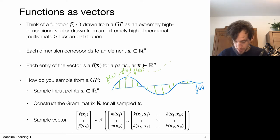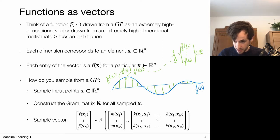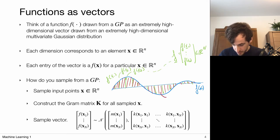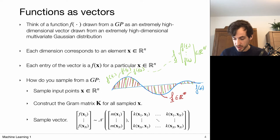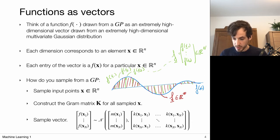Sampling a function at points x1, x2, x3 gives function values f(x1), f(x2), f(x3) — a random vector of n random variables. Sampling on a denser grid gives a higher-dimensional vector, and in the limit as the number of sample points goes to infinity, this becomes an infinite-dimensional vector. A continuous function is therefore an infinite collection of random variables, and the kernel characterizes the correlations between all these points across the continuous input domain.